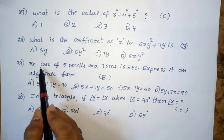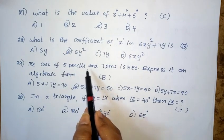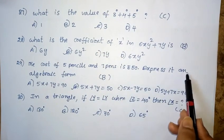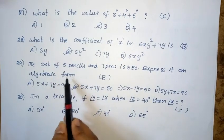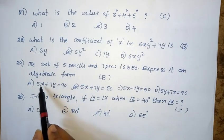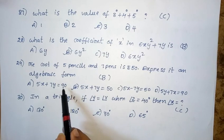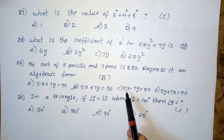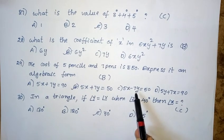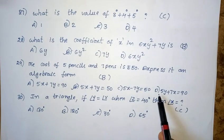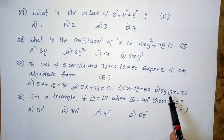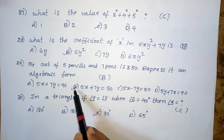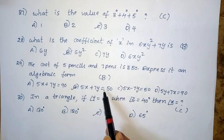Twenty-ninth question: The cost of 5 pencils and 7 pencils is 50 rupees. Express it in algebraic form. Option A: 5X plus 7Y equal to 90. Option B: 5X plus 7Y equal to 50. Option C: 5X minus 7Y equal to 50. Option D: 5Y plus 7X equal to 90. The right answer is option B — 5X plus 7Y equal to 50.